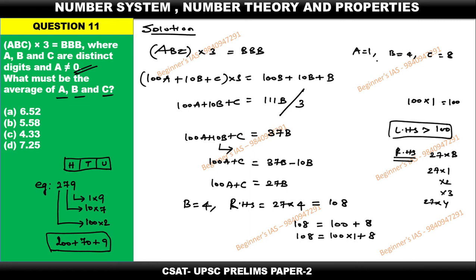After finding this, we need to identify the average. (A + B + C) / 3 = (1 + 4 + 8) / 3 = 13 / 3 = 4.33. Check with the options. The answer for this question is option C: 4.33. Thank you all. If you have a doubt, please comment and I will clarify. Thank you once again, have a good day.